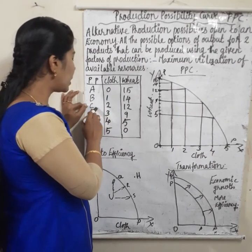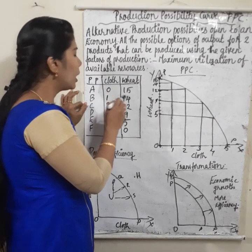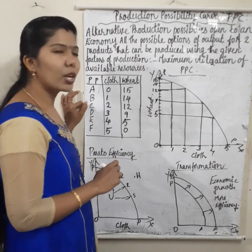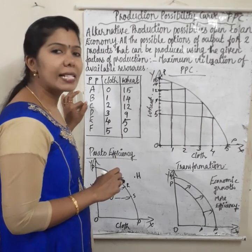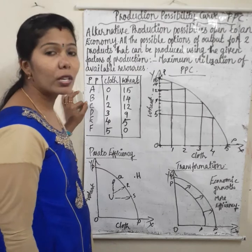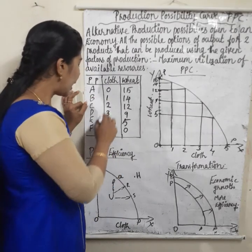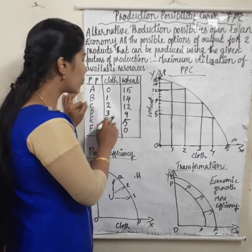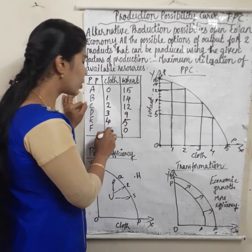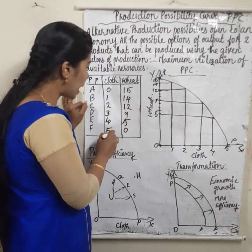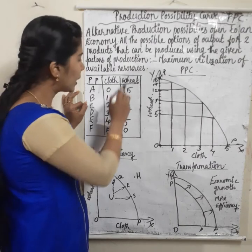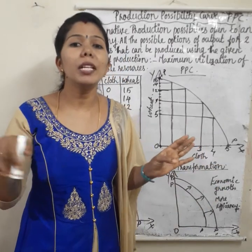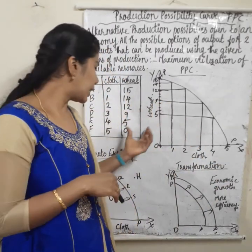In possibility C, 2 units of cloth are produced. For that, 2 units of wheat are sacrificed in order to produce one more unit of cloth. Like that, it continues: for 3 units of cloth, 9 units of wheat; for 4 units of cloth, 5 units of wheat. For the maximum of cloth — 5 units — wheat is 0. So in order to produce one commodity at maximum, another commodity will be 0. That is the table.